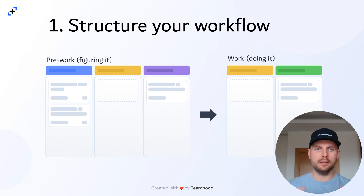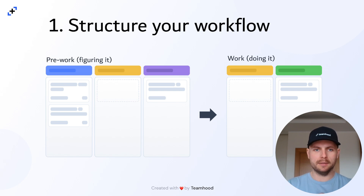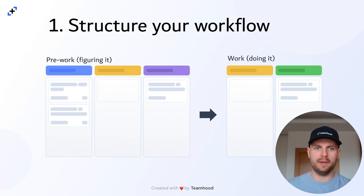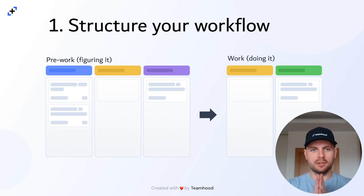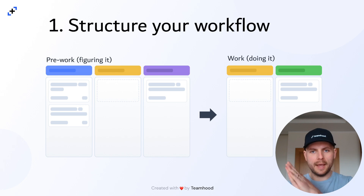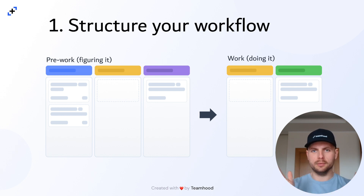Let's start, and I usually start from the actual flow or workflow, as most people call it. When we're speaking about the process, it's all about value creation. That part where you create value can be complex, and you might have more stages than you actually think. A good example of how to improve that situation is to structure your workflow by splitting it into two essential pieces: one for figuring stuff out — which I call pre-work — and then the actual work part where you are doing it. Figuring out and doing it, split into two different pieces.